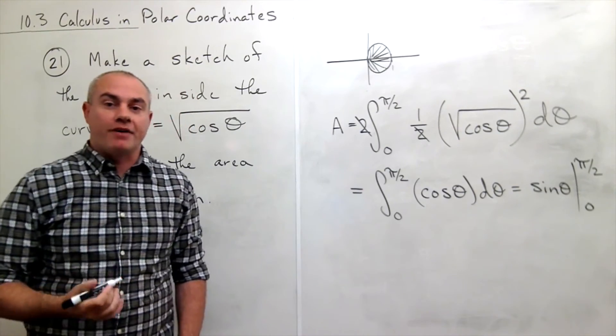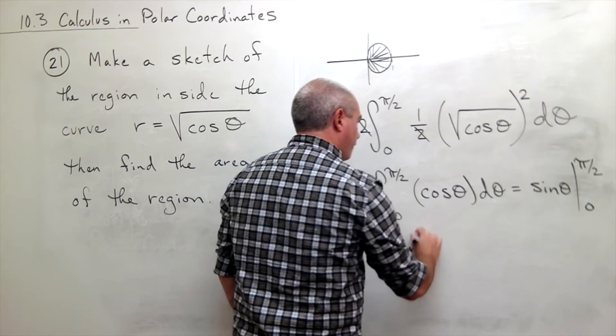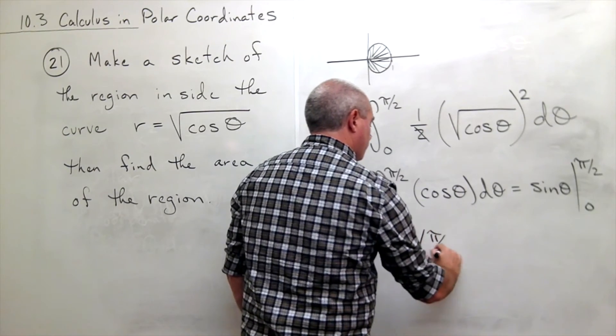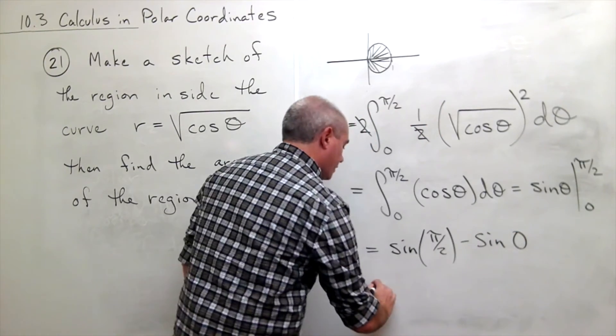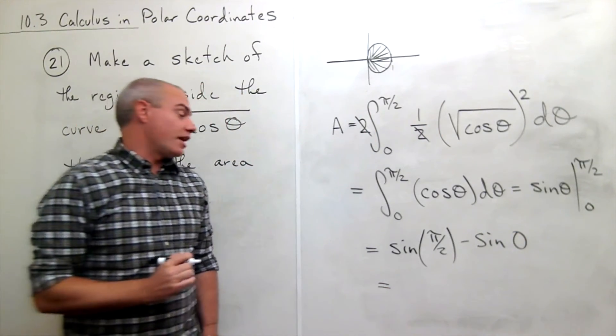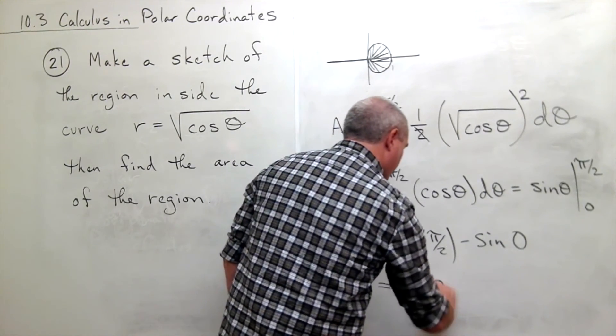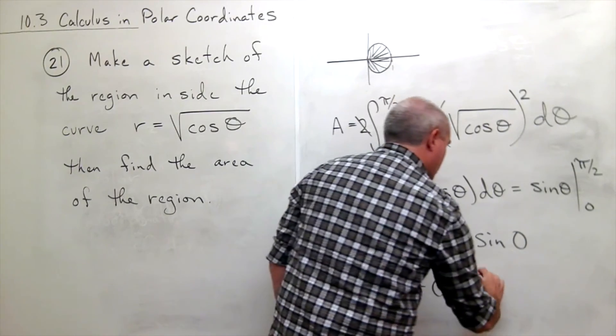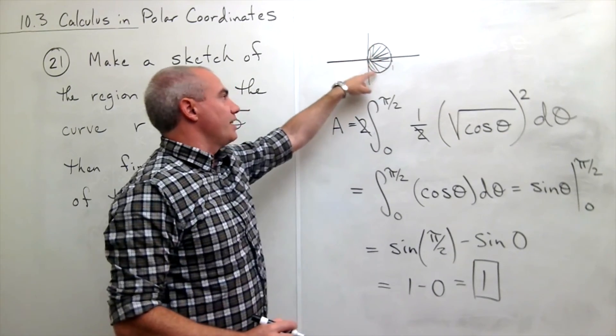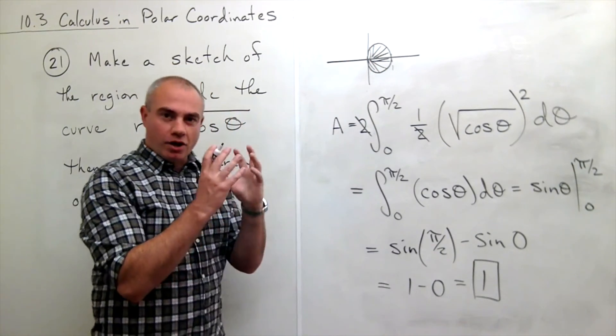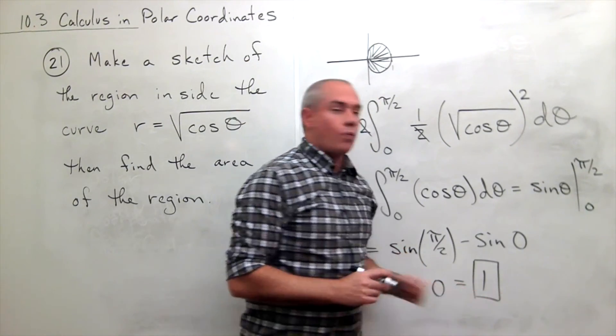Now let's plug in the pi over two and the zero. So I get sine of pi over two minus the sine of zero. Sine of pi over two is one, sine of zero is zero, so we get one minus zero, which is one. So the amount of area inside this kind of oblong shape right here is exactly one unit.